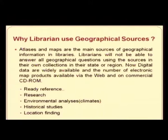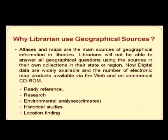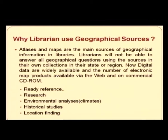Why do libraries use geographical sources? Atlases and maps are the main source of geographical information in libraries. Librarians will not be able to answer all geographical questions using sources only in their own state or region. Digital data are widely available, and electronic map products are available via the web and on commercial CD-ROM for ready reference, environmental analysis, climate-related research, historical studies, and location finding. An atlas or map is an extremely important ready reference for any researcher to begin research on a particular place.